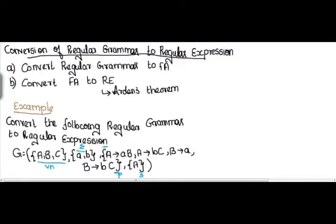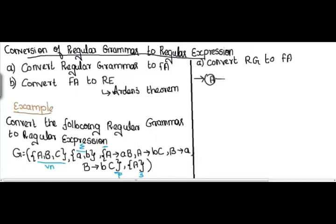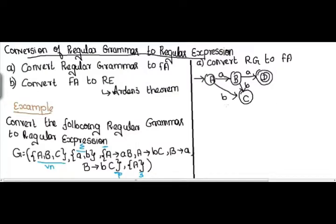The first step is to convert regular grammar to finite automata. A is my initial state. If the input is 'a', the next state is B. The next production is A → bC: A is the present state, if the input is 'b', the next state is C. For production B → a, if input is 'a' from state B, the next state is a final state — I am going to assume one final state here as D. Next, B → bC: if input is 'b', next state is C. This is my finite automata for this regular grammar.